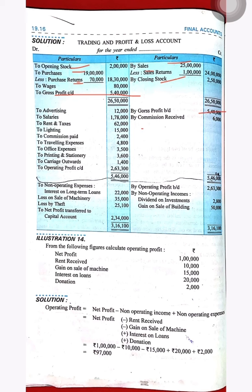Now in the P&L account: on the credit side, commission received. On the debit side, we deduct operating expenses — advertisement, salaries, rent, lighting, commission paid, travelling expense, office expense, printing and stationery, and carriage outward. After these deductions, the balance amount is our operating profit.